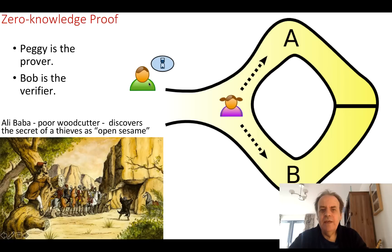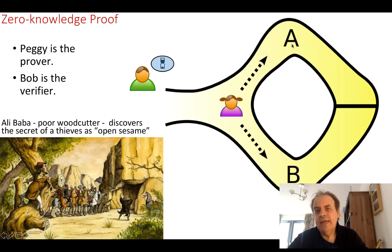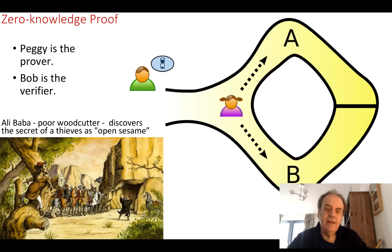Bob wants to verify that Peggy actually knows the secret passphrase to open the connection between A and B. First, he allows Peggy to go into the cave and select whichever route she wants — either A or B. Bob then shouts into the cave and asks Peggy to come back through a specific passageway. He might shout 'B', and if Peggy reveals herself back through B, there is a chance she knows the secret passphrase.